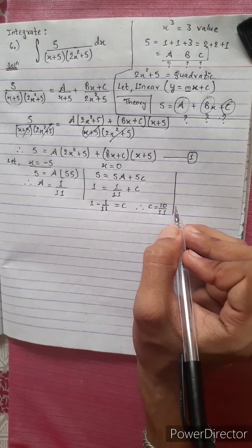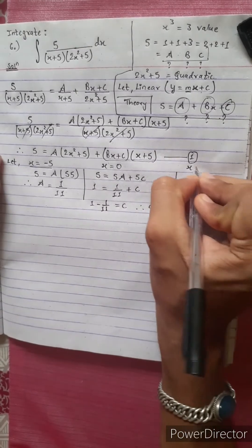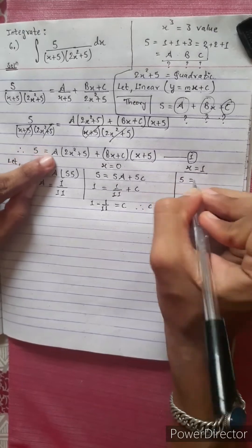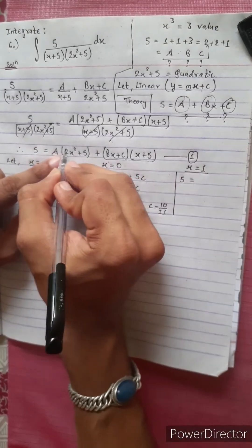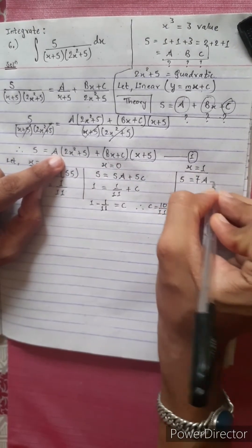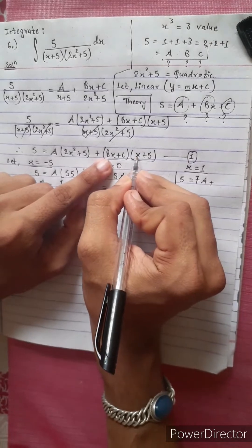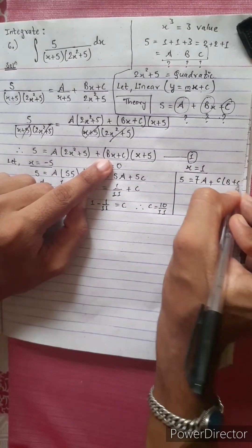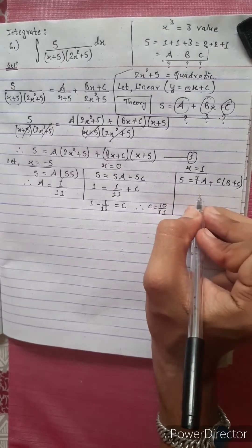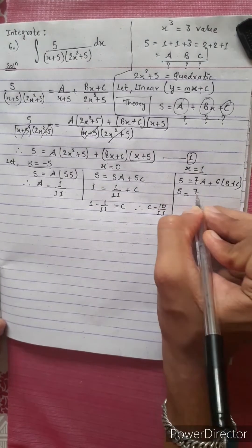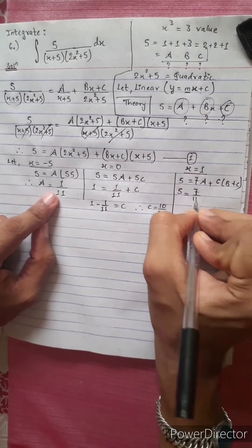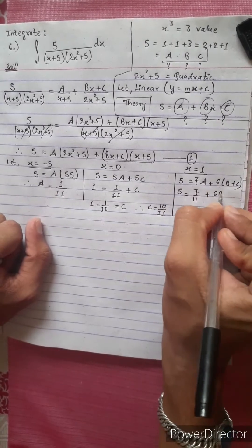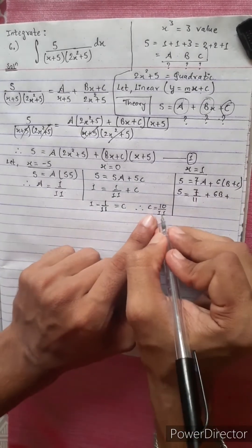Let x equals 1. Then 5 equals 7A plus B plus C. We have 7A plus C. Since A is 1 by 11, 7A is 7 by 11, and C is 10 by 11. So 7 by 11 plus C gives 7a plus c, and we can write 6 equals 7A plus B plus C, meaning 6b plus c.